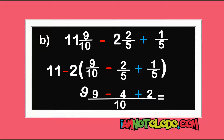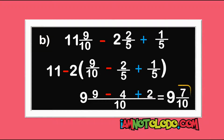This becomes our 9, then 9 minus 4 plus 2 is 7 over 10. This is our final answer. You can see that this method is very easy and straightforward. Do you understand? You can watch this part over again if you're confused.